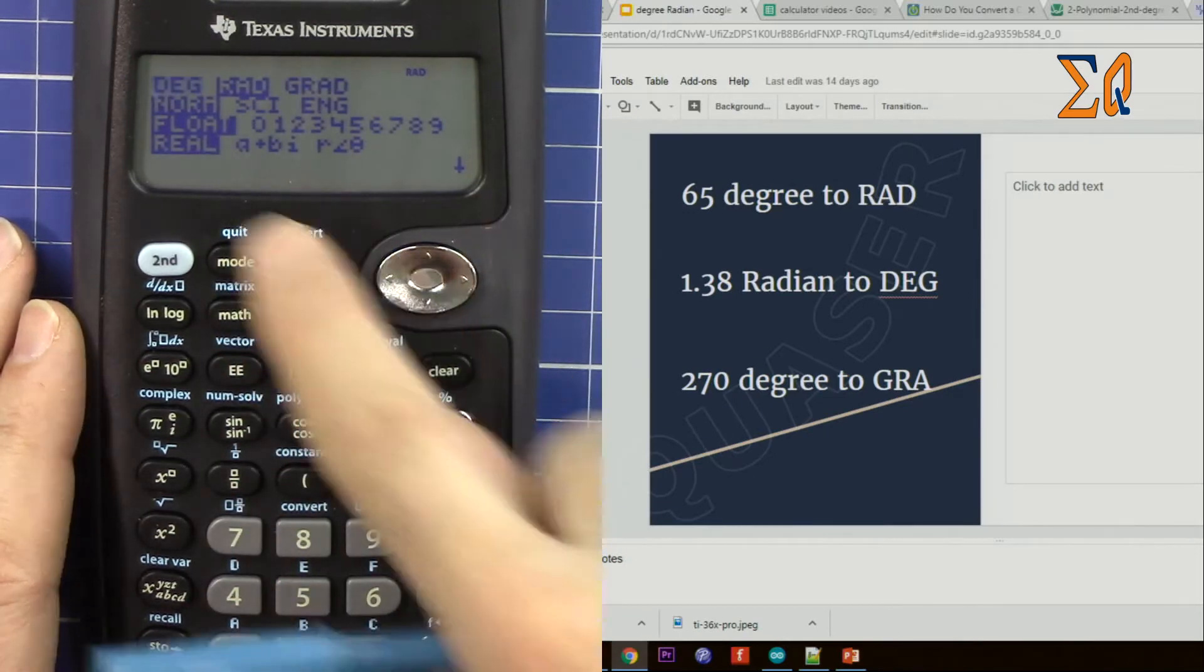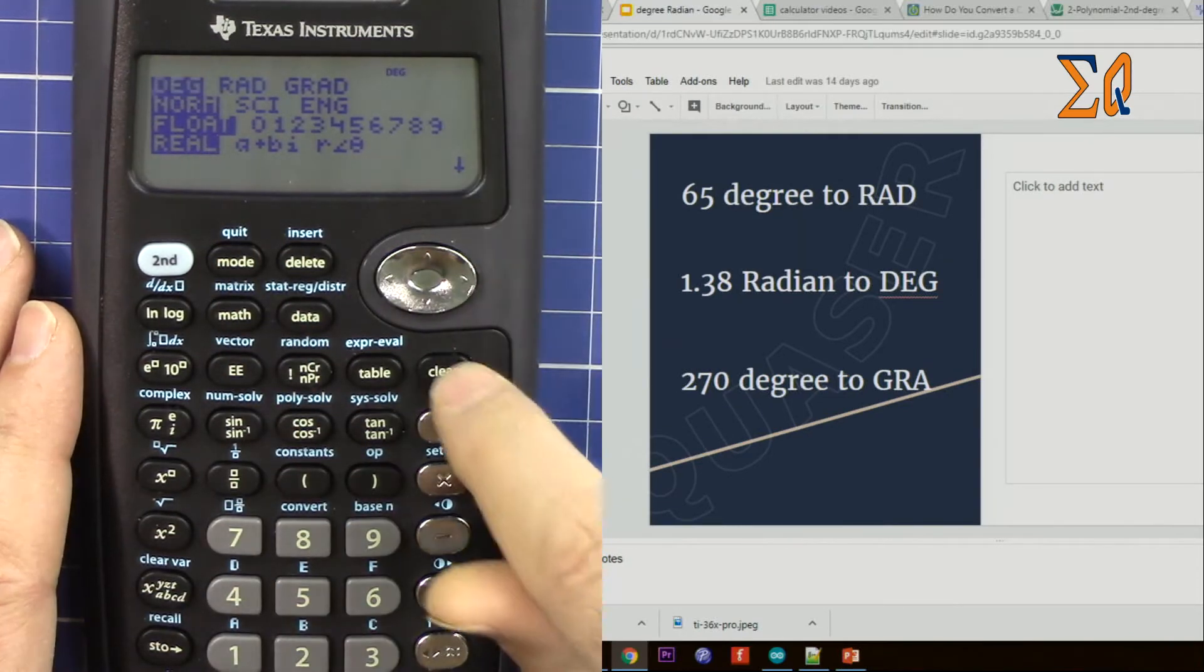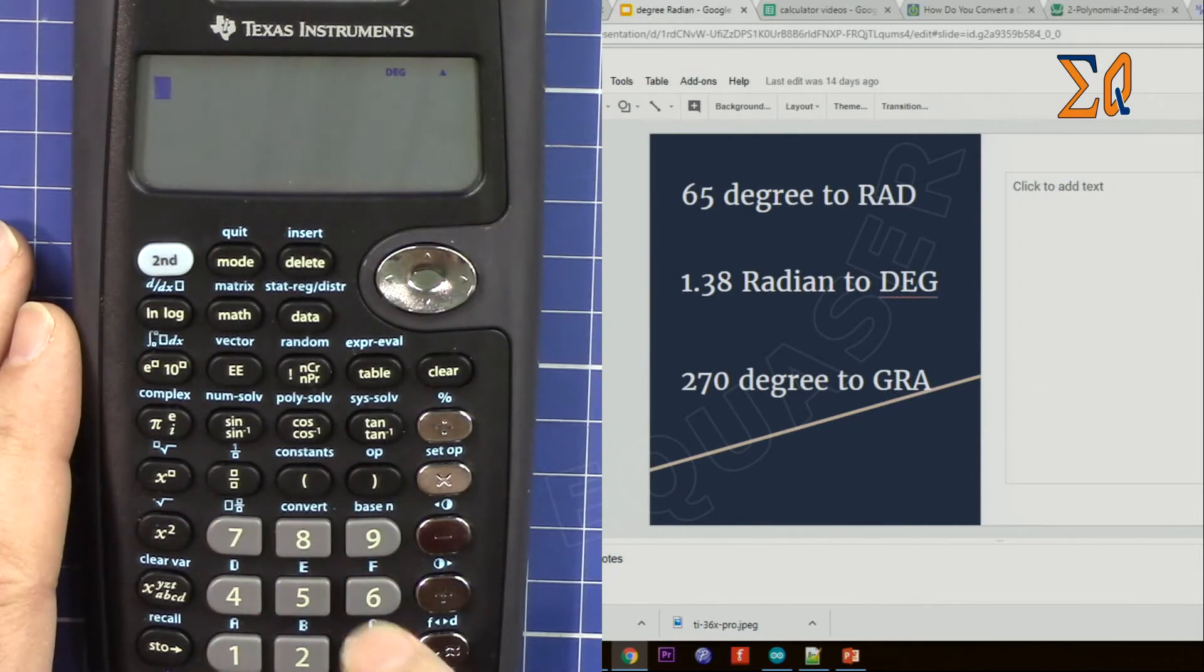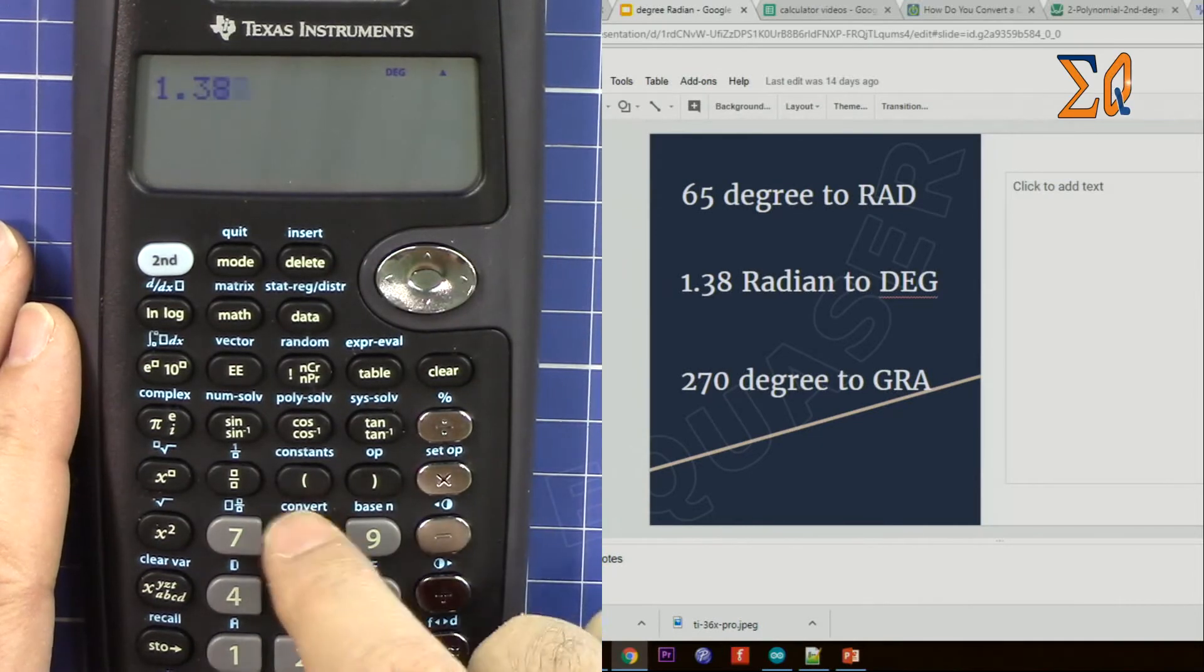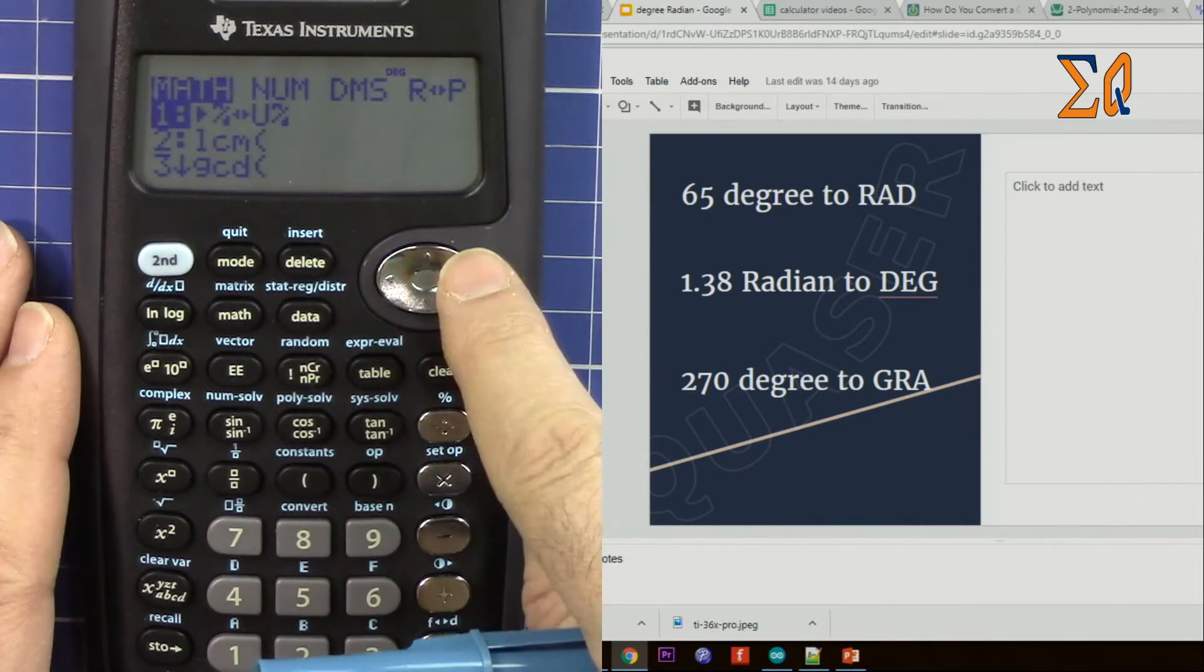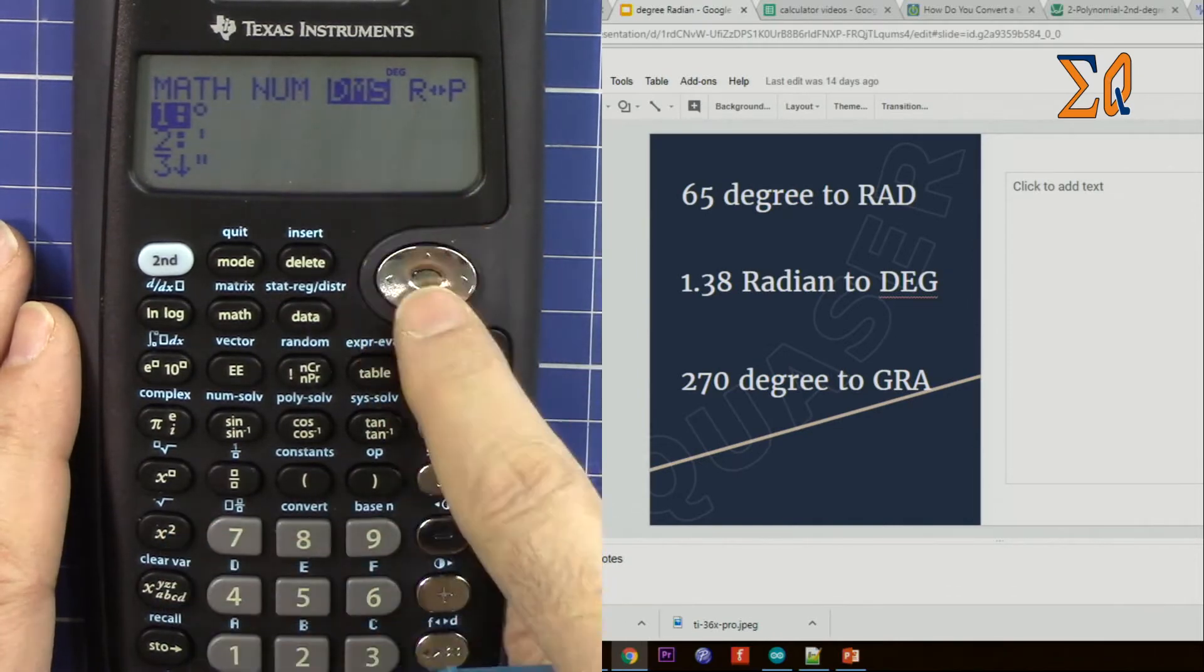1.38, press math, come to the right, go down... sorry, on this one go down and R4. So now 1.38 radian...